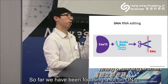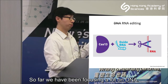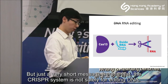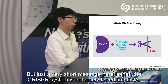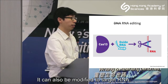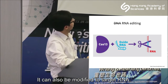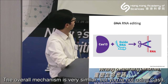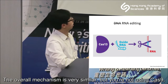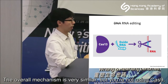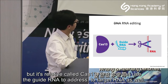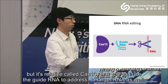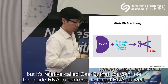A brief note: the CRISPR system is not solely for editing DNA. It can also be modified to target RNA. The overall mechanism is very similar, but instead of Cas9, you use a relative called Cas13, which you can use with a guide RNA to target RNA as well, not necessarily DNA.